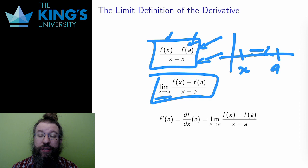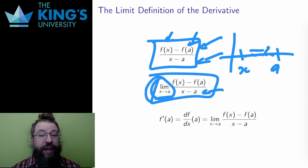This is why I needed limits as processes. I can't evaluate at x equals a. That leads to division by zero, which doesn't make sense. But I can approach. I can look at what happens as x gets closer and closer to a.